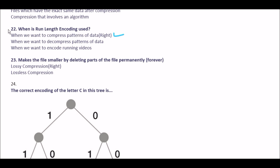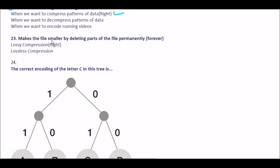Next important question: what makes the file smaller by deleting parts of the file permanently? Option A lossy compression, option B lossless compression. The right answer is option A: lossy compression. Lossy compression is used for, for example, video files.